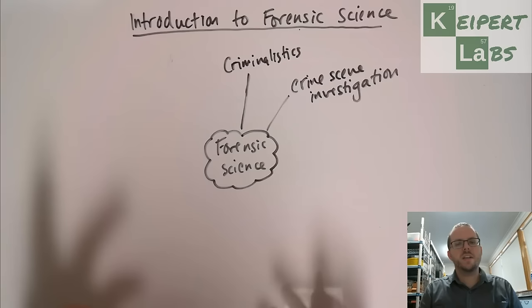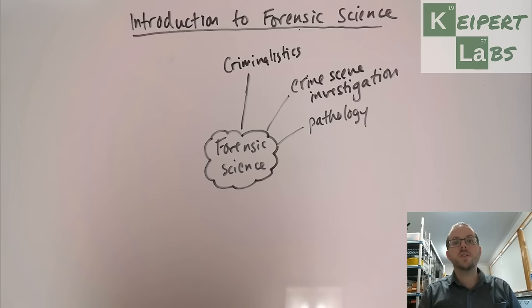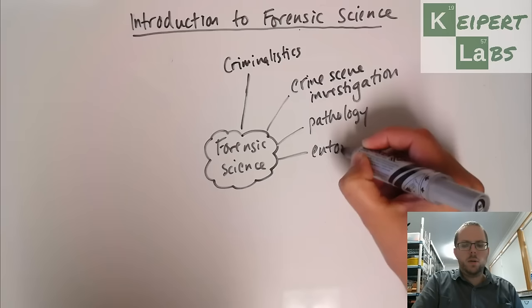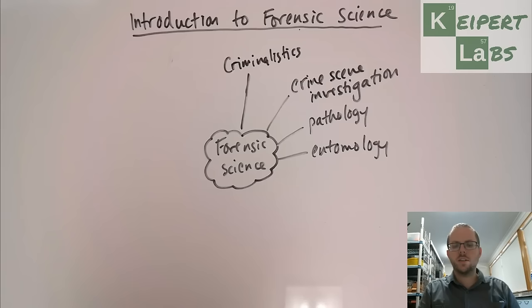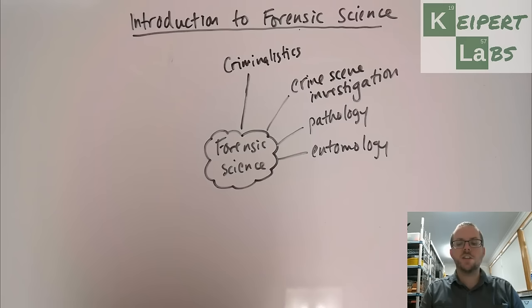We've got forensic pathology, which is probably what you're most familiar with from TV shows — a doctor doing a post-mortem or autopsy on a body to identify cause and manner of death and collect any evidence. We've got forensic entomology, which deals with insect activity. It's not a particularly nice thing to discuss, but it's very relevant to examining dead bodies, especially those left in open areas. The nature of the insects working to decompose the body gives us a lot of information about the time of death, and depending on factors like the season or any wounds, a forensic entomologist studies the insects to glean what evidence might be there.